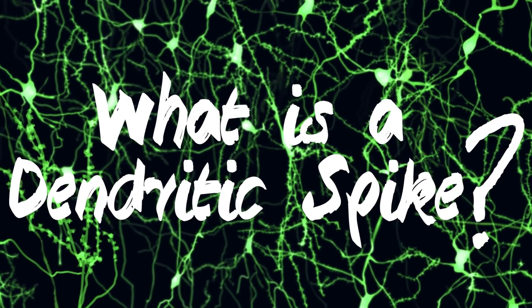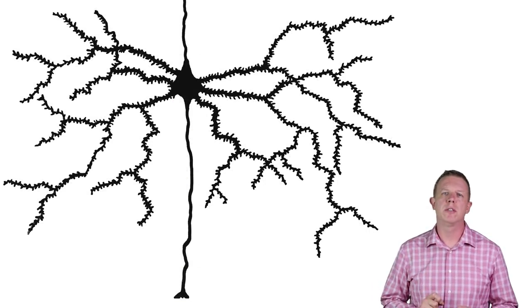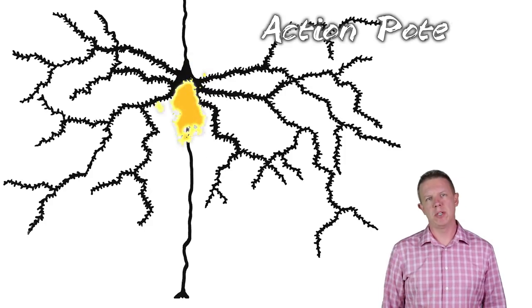What is a dendritic spike? A pyramidal neuron spikes in order to communicate to other neurons. This is called an action potential.